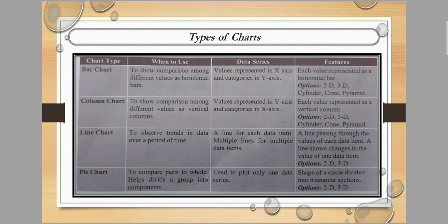Next is the column chart, used to show comparisons among values using vertical columns. It is similar to the bar chart, but the orientation changes — values are represented on the Y axis and categories on the X axis. Categories like English, Hindi, Bengali are on the X axis. Features are similar to the bar chart; each value is represented as a vertical column — 2D, 3D, cylinder, pyramid, etc.